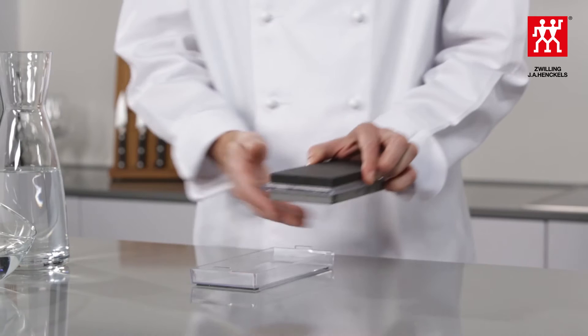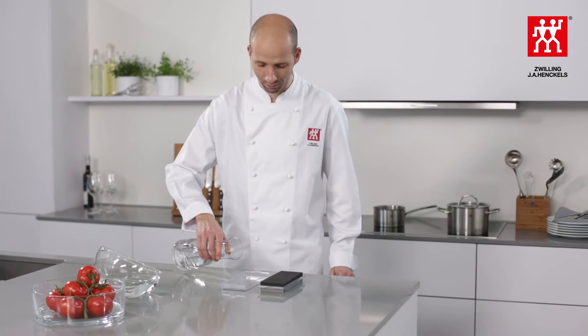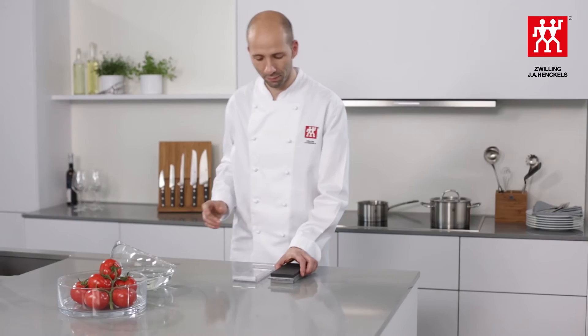We'll now show you how to sharpen your knife correctly with a sharpening stone using the Twin Stone Pro. Each side of the stone has a different grain. A coarser grain on one side for minor damage, dents and chips, and a fine-grained side for final fine honing.